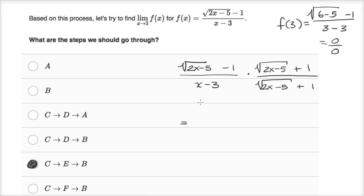And this is going to be equal to, see this numerator, square root of two x minus five squared, it's going to be two x minus five, and then you're going to have negative, you have a minus one squared, which is going to be minus one. All of that over x minus three times square root of two x minus five plus one.